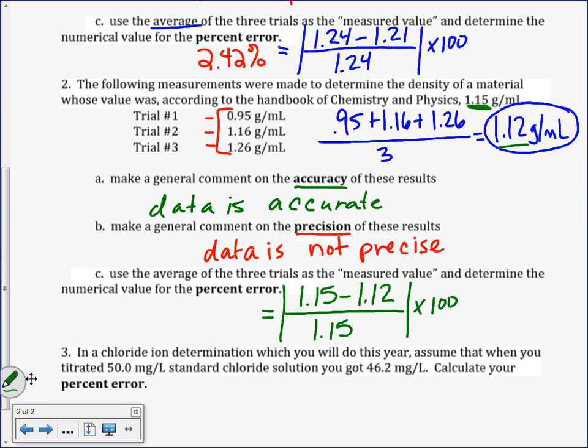Looking up here, 1.15 minus 1.12 over 1.15. Don't forget your absolute values times 100. That's going to give you your percent error. Calculate it. 2.61%. That definitely still falls within our 5% range.